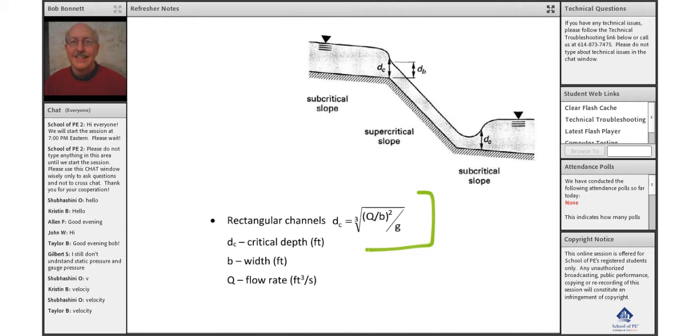It's the cubed root of your flow rate divided by your channel width. That value is squared, divided by g. The whole thing is taken to the cubed root.